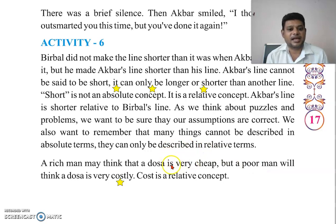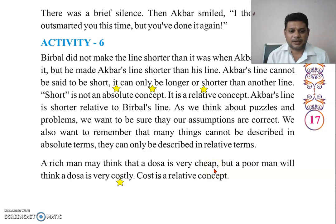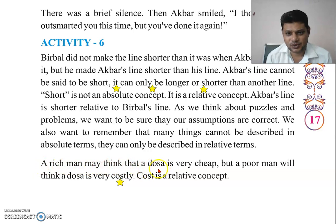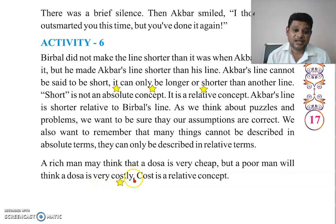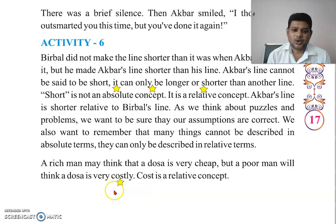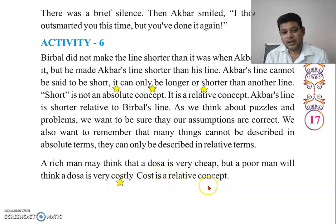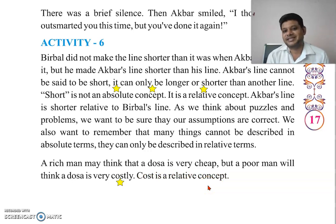For example: a rich man may think that a dosa is very cheap — जो rich man होता है उसके लिए dosa सस्ता है। But here the cost is relative — you cannot judge it in absolute terms. Yes, that is a relative concept.